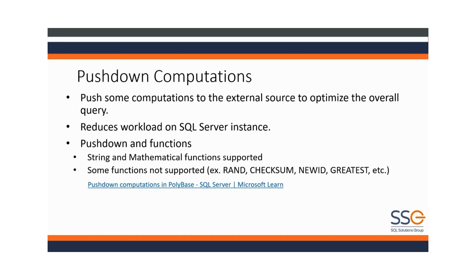The key takeaway is that PolyBase can also push down the JOIN operator, which is very powerful — it pushes the join down to where the data resides and brings back only the result. Without join push-down, data from the joined tables is brought back into TempDB and joined there, creating extra overhead on your SQL Server instance.